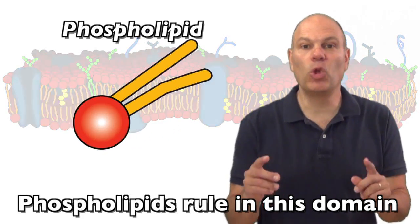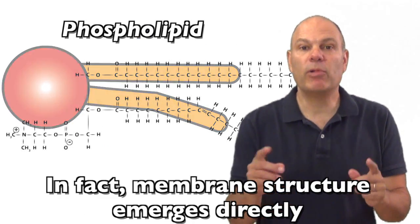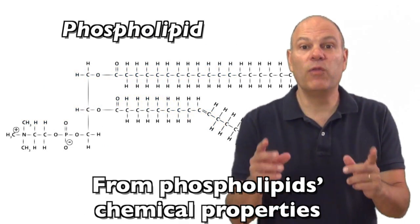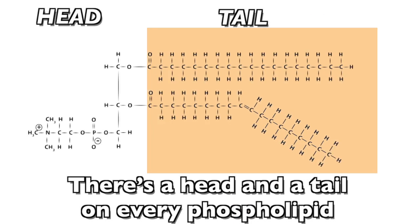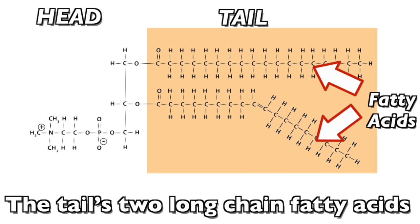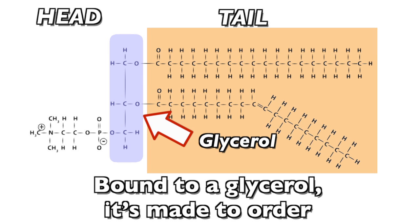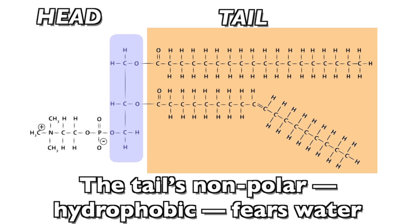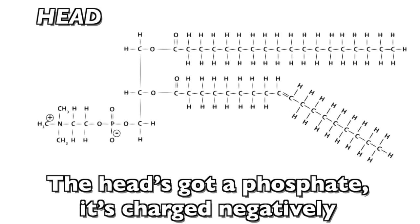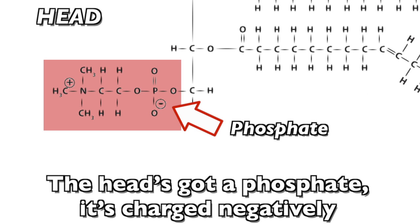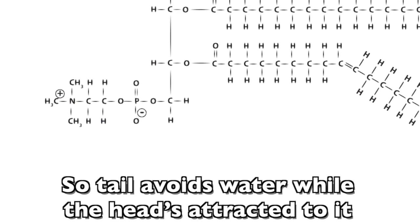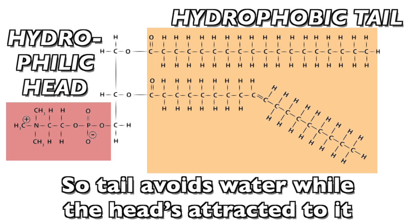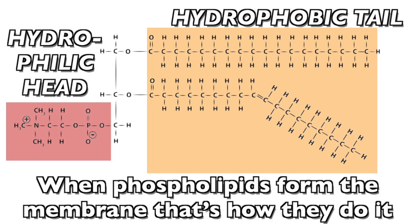So let's take a look at what makes up the membrane. Phospholipids rule on this domain. In fact, membrane structure emerges directly from phospholipids' chemical properties. There's a head and a tail on every phospholipid. The tail's two long-chain fatty acids bound to a glycerol. The tail's non-polar, hydrophobic — fierce water. The head's got a phosphate, it's charged negatively, makes the head hydrophilic, plays in water happily.